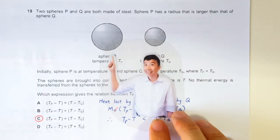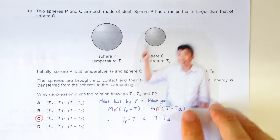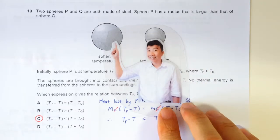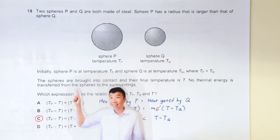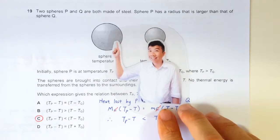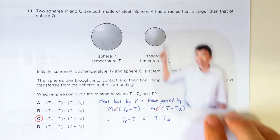Okay, so this sphere is at a higher temperature than this sphere. So when they are brought into thermal contact, heat is going to flow from this sphere to that sphere. But the question says that no heat is transferred to the surroundings, so whatever heat lost by P is also the amount of heat gained by Q.